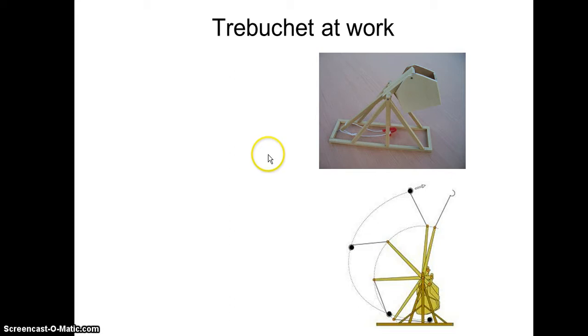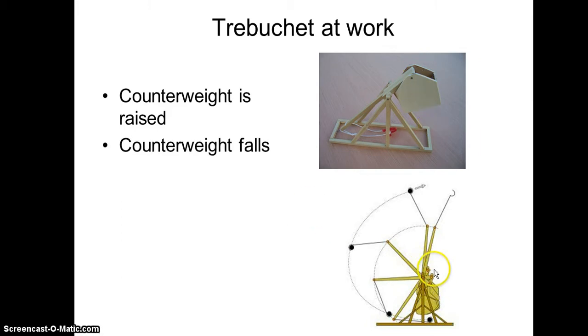The trebuchet works when the counterweight is raised here. You can see in this diagram it's being moved up. And then the counterweight will fall. When it falls, it's going to move or pull the arm with it.